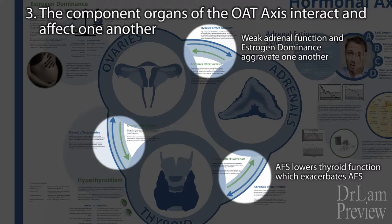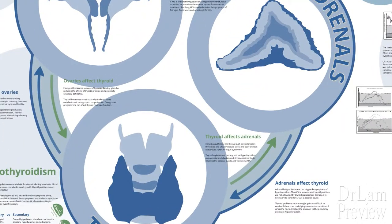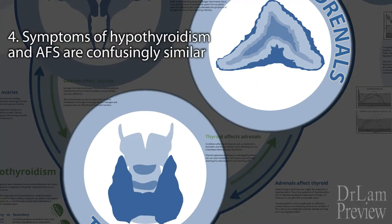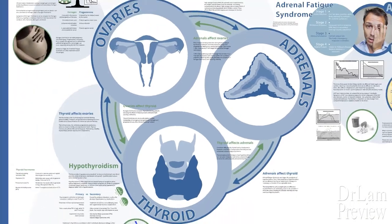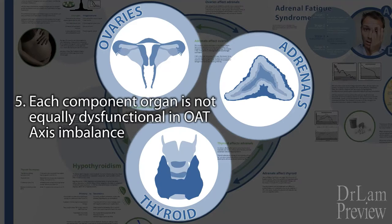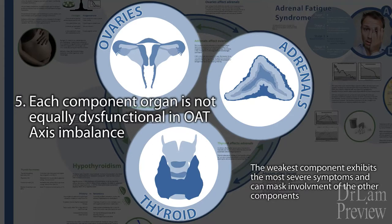Adrenal fatigue syndrome also lowers thyroid function, which in turn worsens adrenal fatigue itself. The OAT axis imbalance is often missed — symptoms of adrenal fatigue syndrome and hypothyroidism are very similar, so sufferers are often treated for hypothyroidism when the underlying problem is adrenal function. Stimulating thyroid function to reduce fatigue often fails over time and worsens adrenal fatigue. Within the OAT axis, each component is not equally damaged; one is usually more damaged and presents as the dominant symptom, masking the others. Knowing which component is dominant is important so the clinician can structure the most appropriate recovery program.